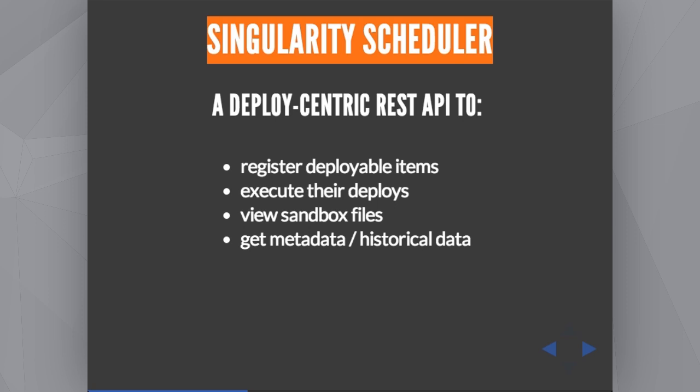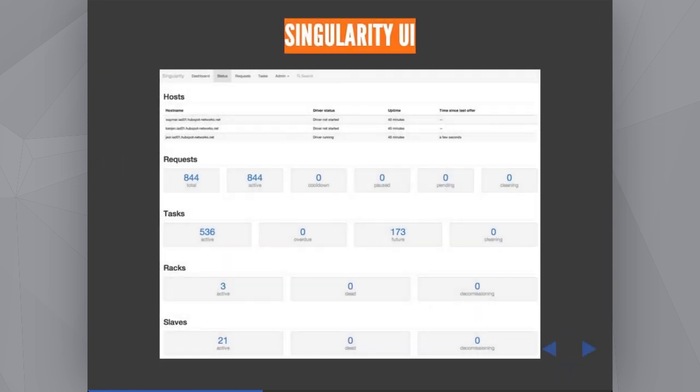Singularity is a RESTful API. You can control all its operations through the provided endpoints. We support two key abstractions: deployable items, where you send a Singularity request to register your item, and then deploy requests to deploy continuously, roll back to a different build, and so on. You can use endpoints to view the files and log files in the sandbox of each task, and get all metadata and historical data about tasks. You can use the API to create your own deploy tools above Singularity, but you don't really need to because we have a great UI already ready for you.